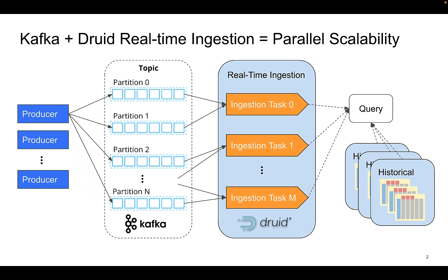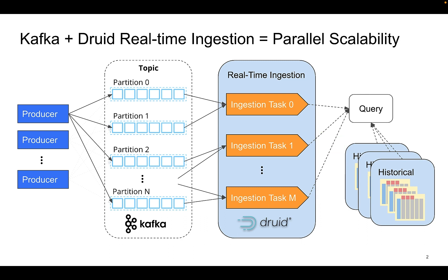Druid ingests the data and while it's ingesting, it processes queries in parallel. When a query arrives at Druid that involves the real-time portion of the data, the subquery is submitted to each of the ingestion tasks that has a portion of that real-time data, resolving those portions of the query in parallel and returning them to the broker. So the parallelization goes from production of messages all the way through the messaging engine, the streaming engine, and through the ingestion tasks all the way to the query.